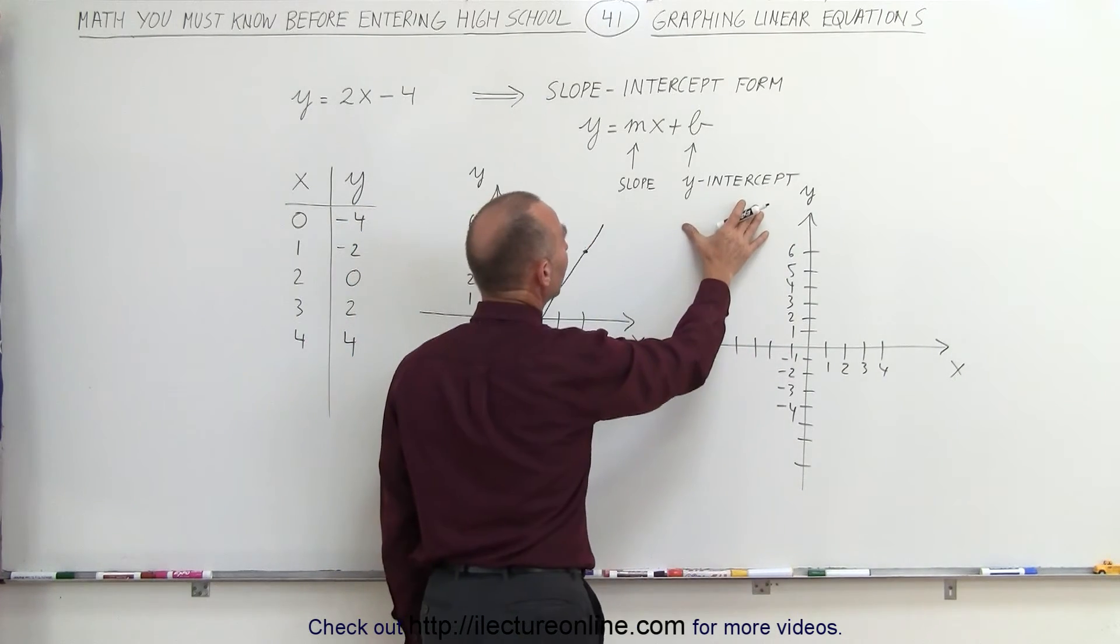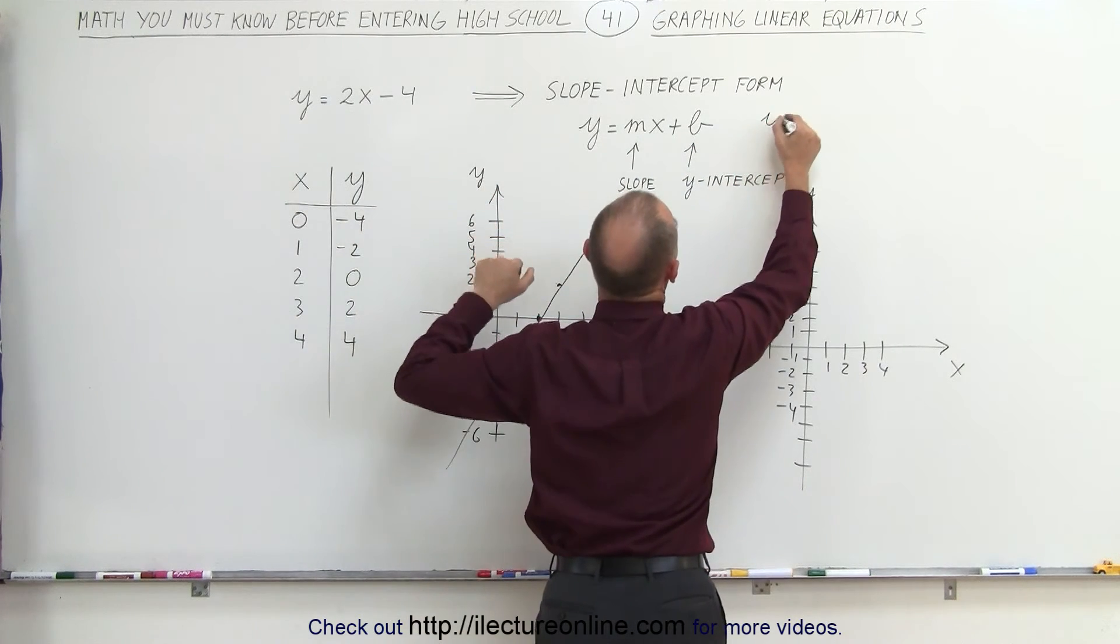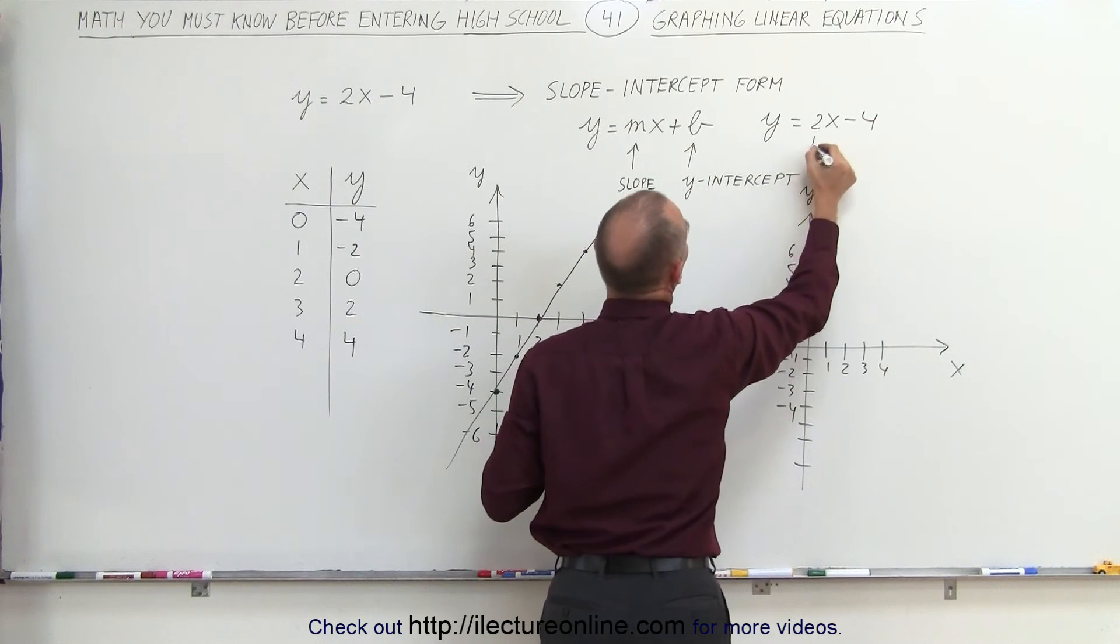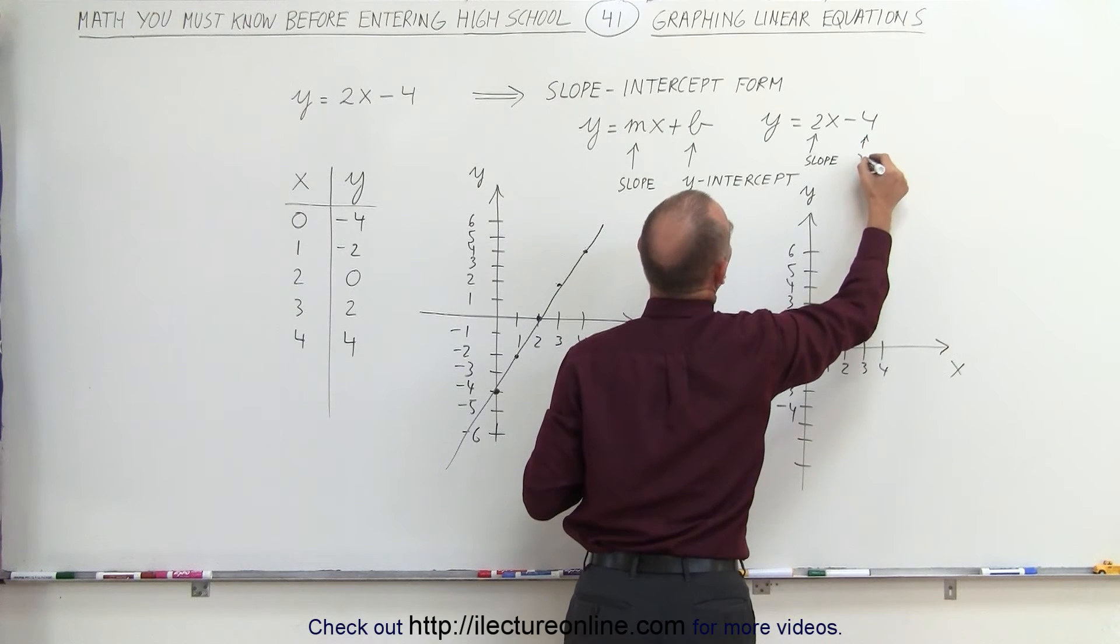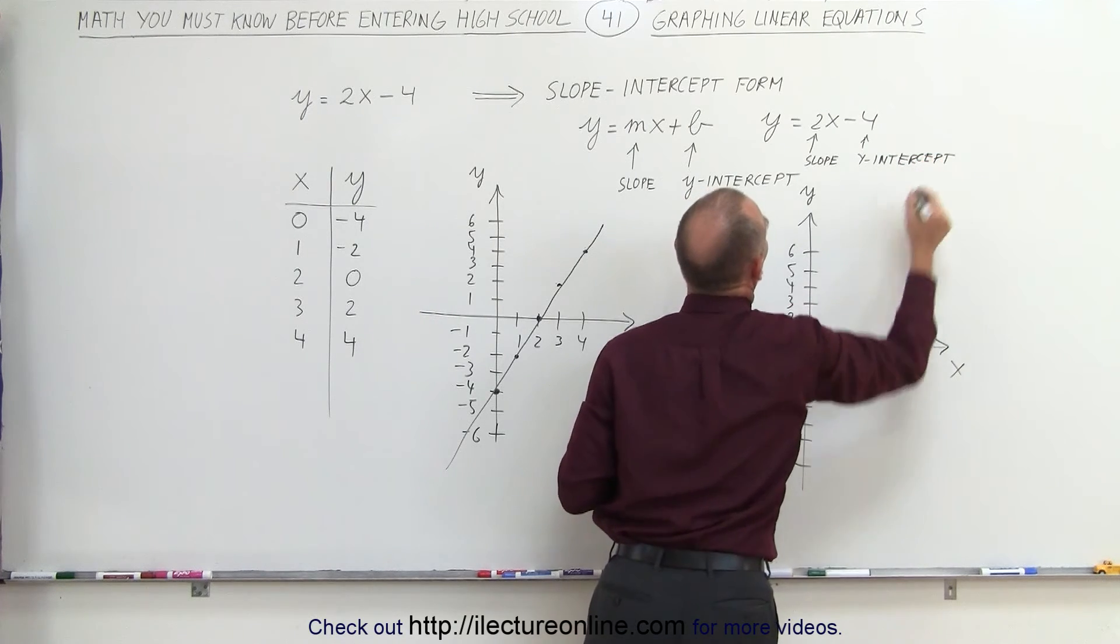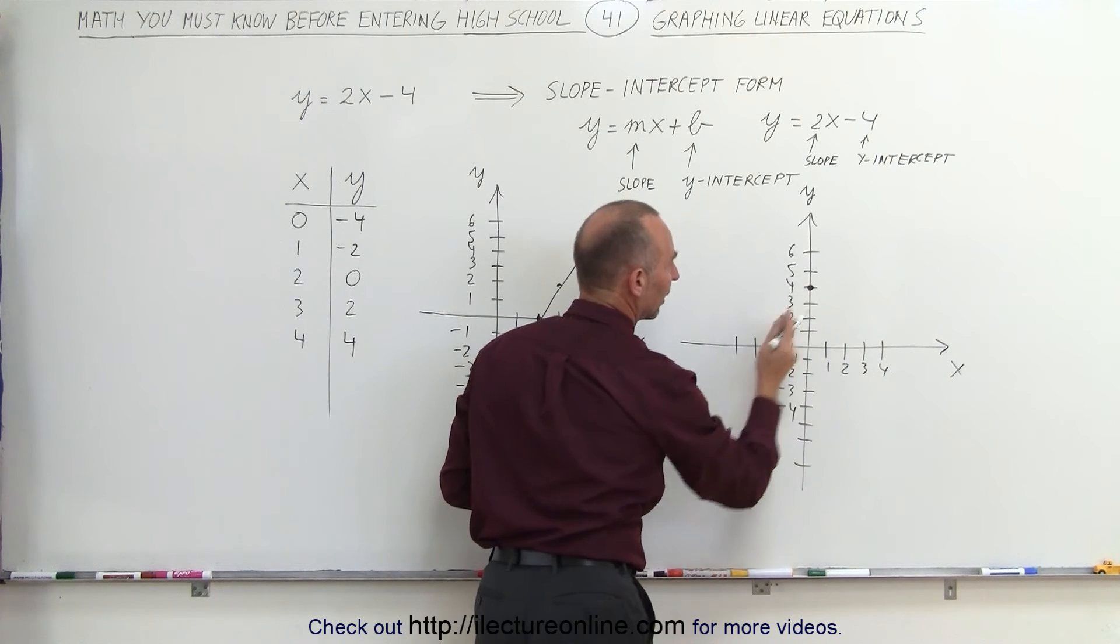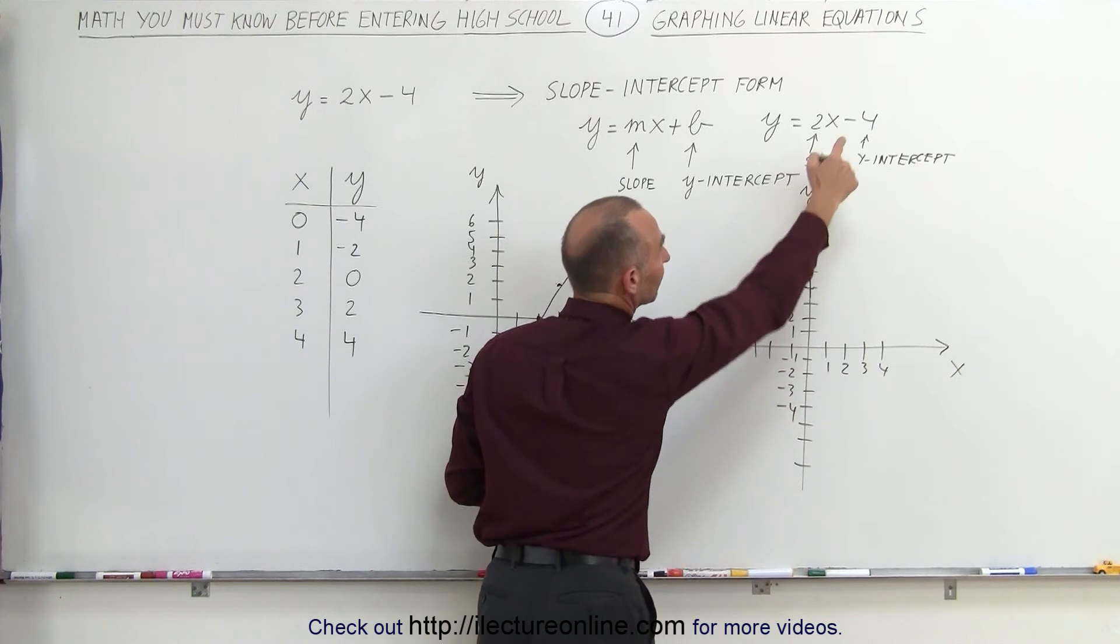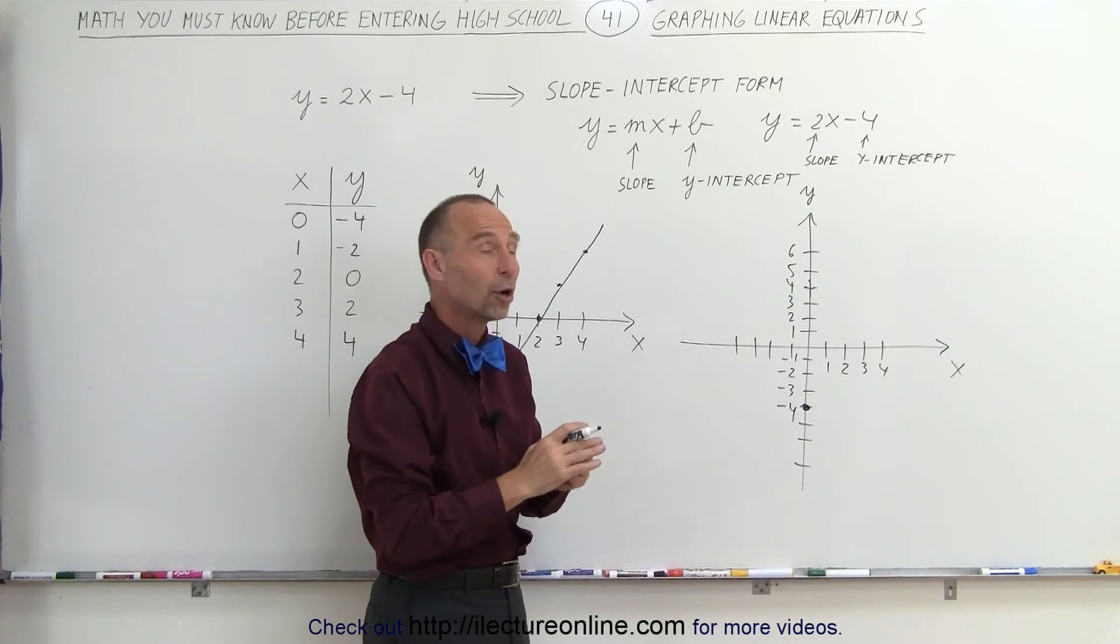What we first do is find the y-intercept. We have y is equal to 2x minus 4. Notice this here is what we call the slope, and this number here represents the y-intercept. The y-intercept is the point where the graph crosses the y-axis. That means right here when y equals negative 4, that's where the graph crosses the y-axis. That's what we call the y-intercept.